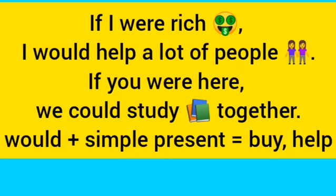Like in this example: if you were here, we could study together. So the structure is: in the if-clause, you're going to use the simple past or the simple past of the verb 'to be.' In the second part, you use 'would' or 'could.'